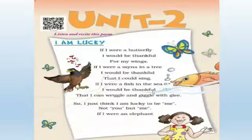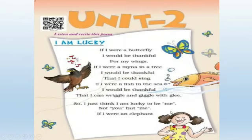Everyone open your Marigold textbook. In this poem 'I Am Lucky,' there is one girl. This poem is about the feelings of a girl. You can see here — this girl thinks: if I were a butterfly, I would be thankful for my wings. Dekho yeh butterfly ki wings hain, toh yeh girl kya think karti hai, kya feel karti hai ki agar main butterfly hoti toh mere paas beautiful wings hoti.